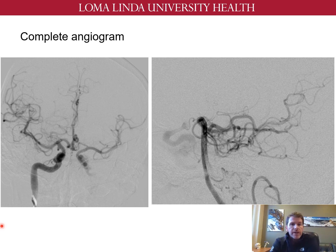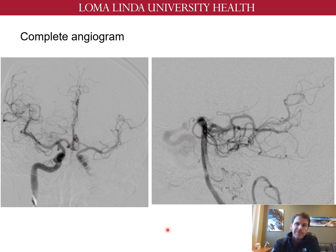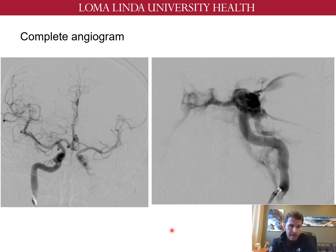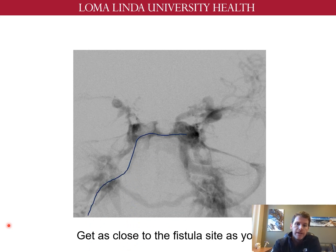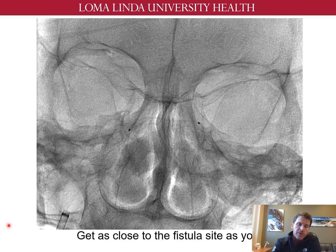One common location for transvenous embolization is with carotid cavernous fistulas. This is a patient with a left-sided direct CC fistula from trauma. We start with a complete angiogram showing cross-filling of the fistula through the ACOM as well as through the PCOM. Having this information ahead of time allows for the possibility of vessel sacrifice if necessary. Here is the left ICA injection, which shows essentially no contrast flow above the level of the cavernous sinus. The final position of the microcatheter is in the left cavernous sinus, which in this case is the fistula site, accessed through the inferior petrosal and inter-cavernous sinuses.